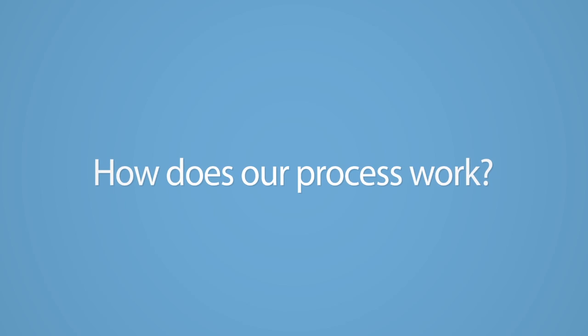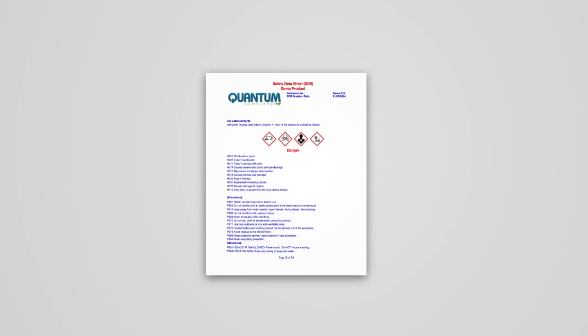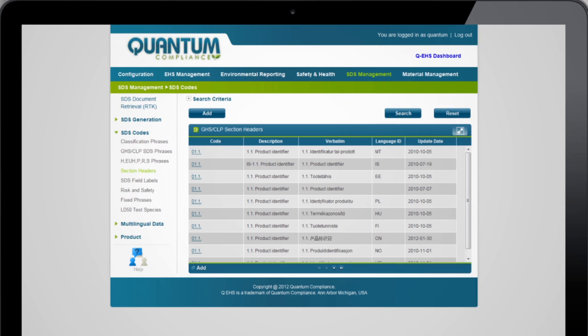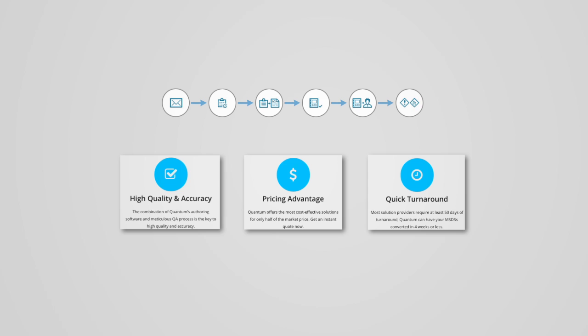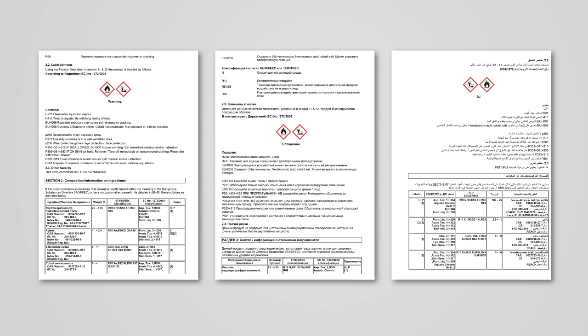How does our process work? GHS requires complex calculation and classification of chemical components. We use one of the most trusted software packages in the market to generate your GHS template, avoid human errors, and ensure accuracy and highest quality output. The software is built with GHS algorithms and can be configured to comply with various regional district templates and languages.